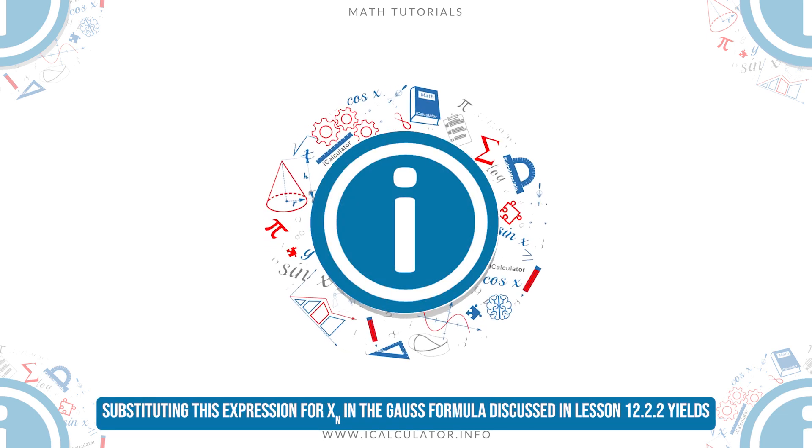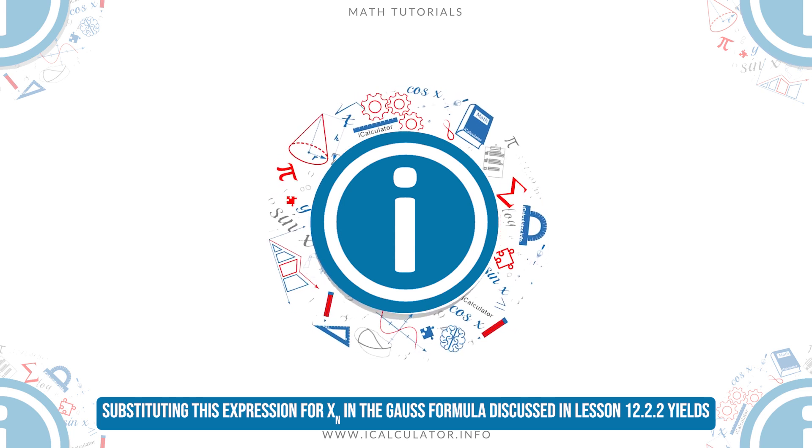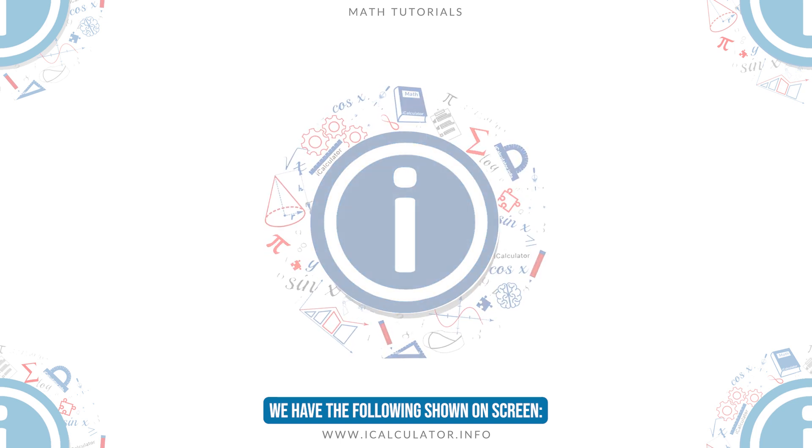Substituting this expression for xn in the Gauss formula discussed in lesson 12.2.2 yields the following formula shown on screen.